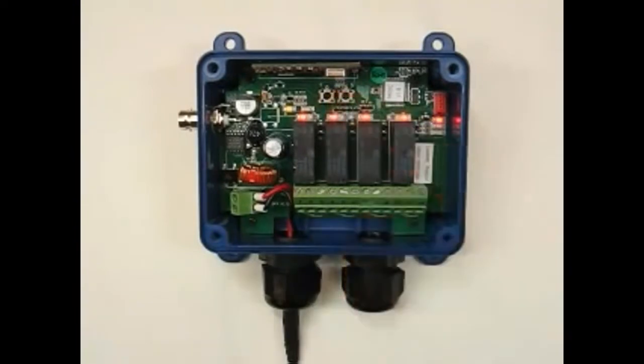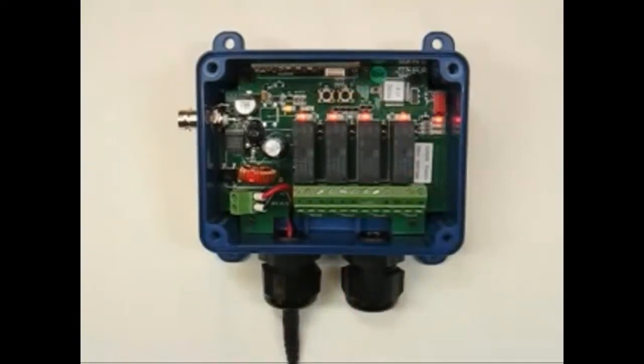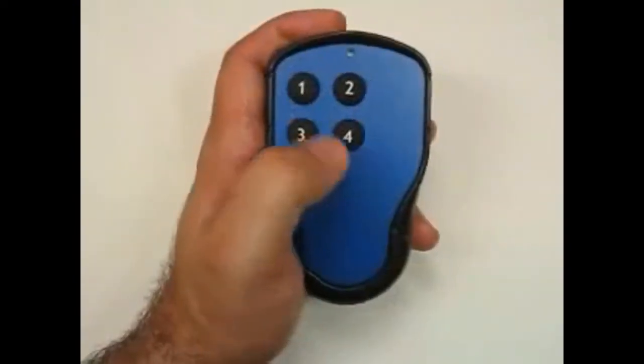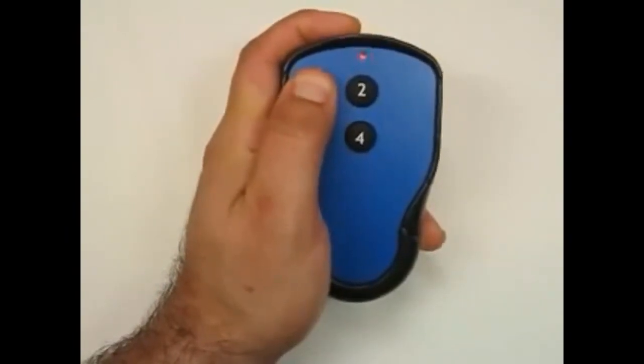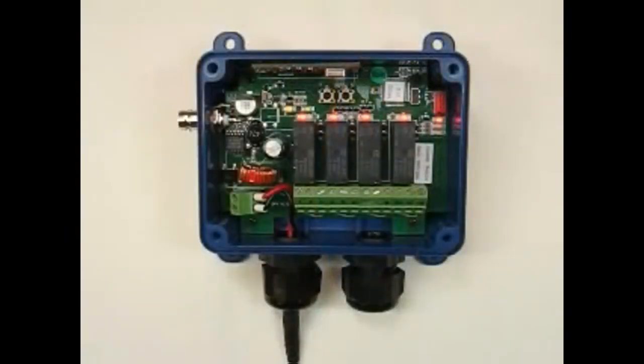Press the select button again to learn the transmitter's adjustable code. Press and hold the desired button on the transmitter until red LED number 6 on the receiver begins to flash.